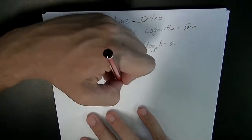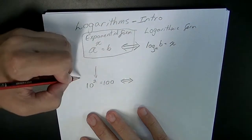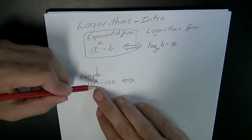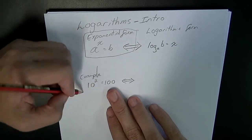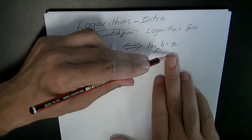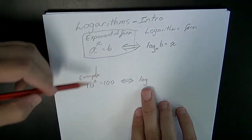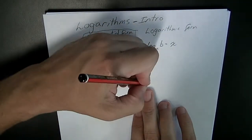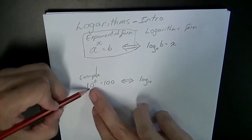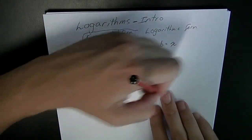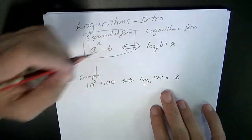If we look at our example here, 10 to the power of 2 equals 100, we can write that in logarithmic form as log base 10 of 100 equals 2.